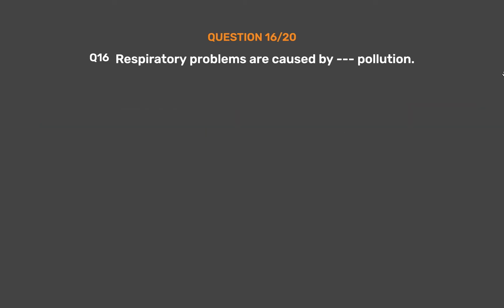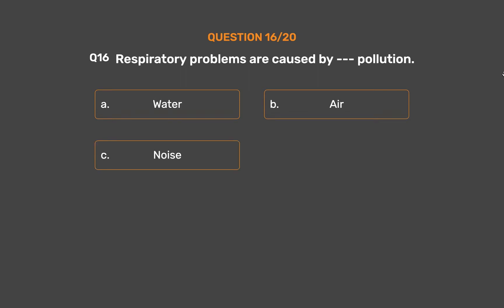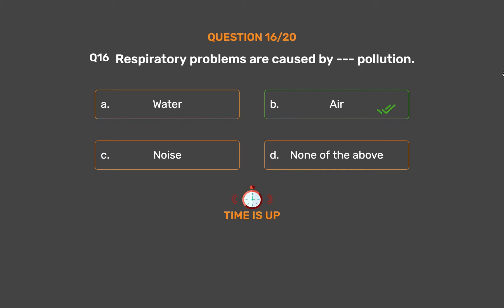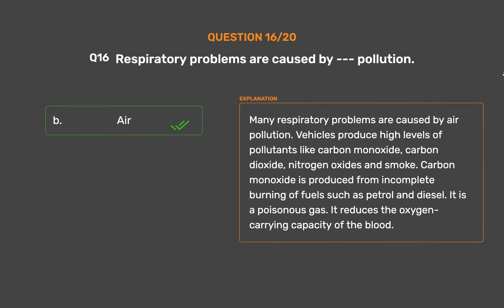Question number 16: Respiratory problems are caused by dash pollution. Option A: Water. Option B: Air. Option C: Noise. Option D: None of the above. The correct answer is Option B: Air. Many respiratory problems are caused by air pollution. Vehicles produce high levels of pollutants like carbon monoxide, carbon dioxide, nitrogen oxides and smoke. Carbon monoxide is produced from incomplete burning of fuels such as petrol and diesel. It is a poisonous gas which reduces the oxygen-carrying capacity of the blood.